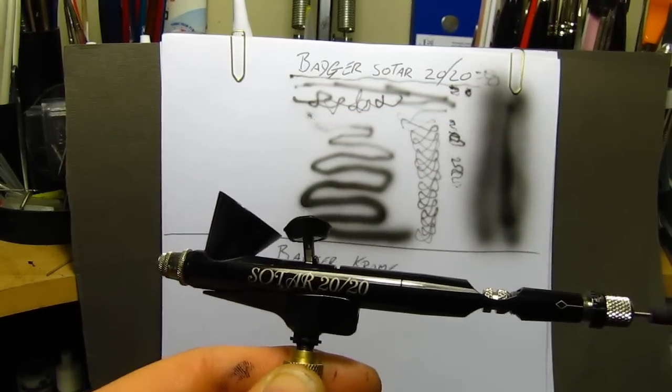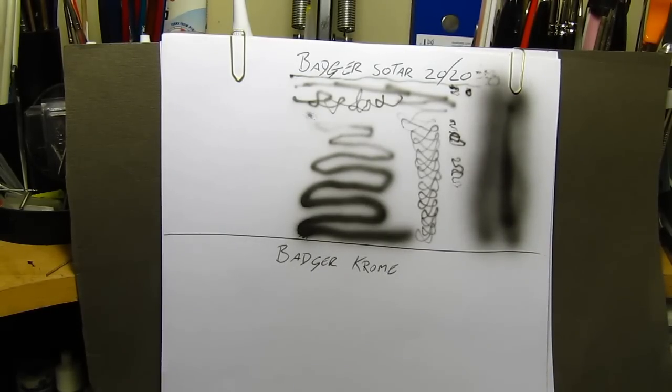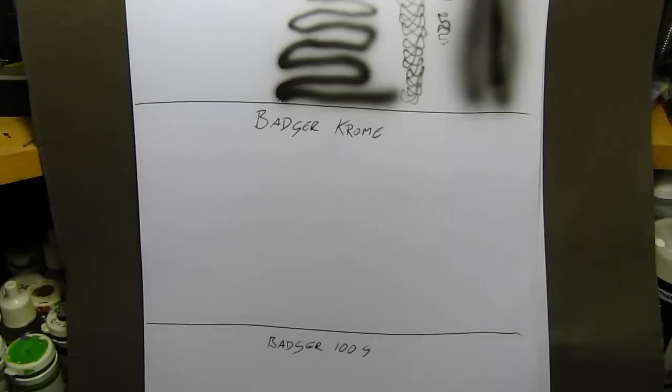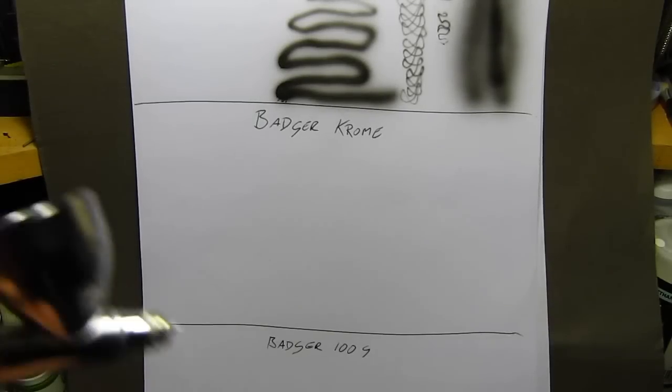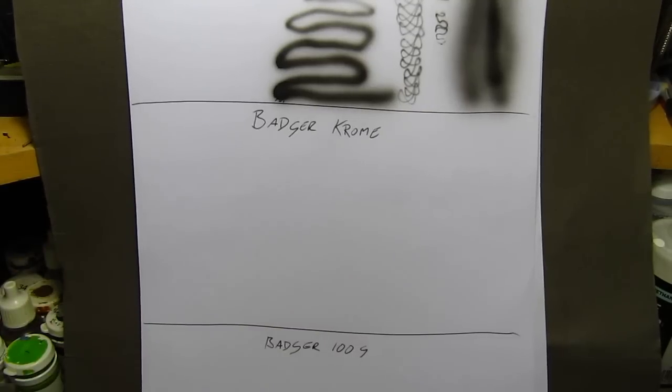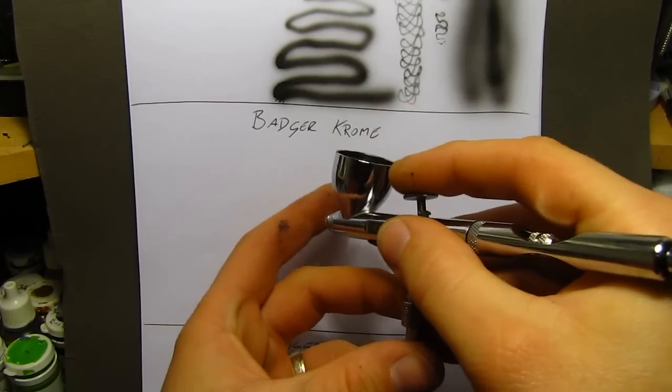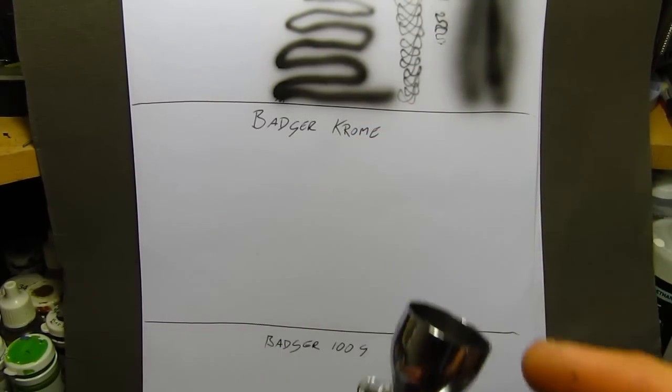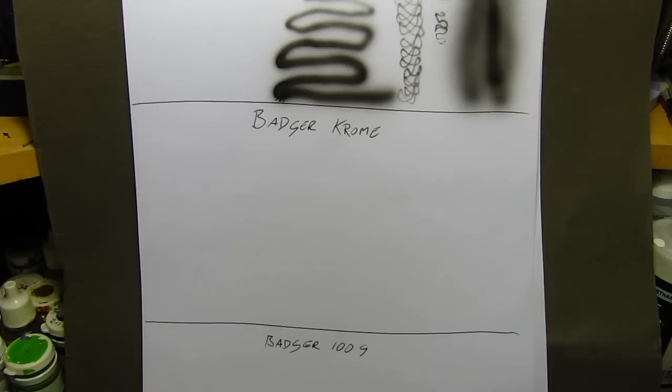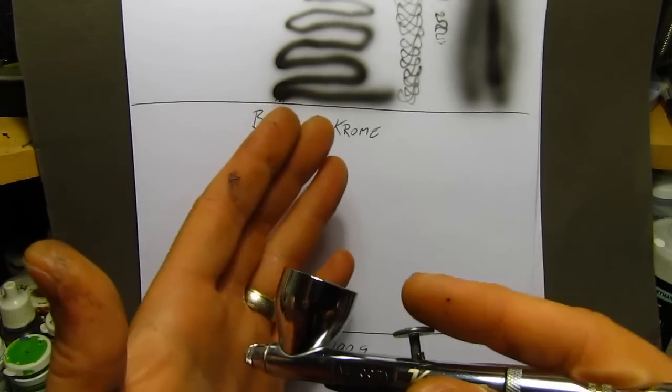And now we're going to transfer over to the Badger Renegade Chrome. And let's see how this new baby of mine, the Renegade Chrome, performs under these conditions. Well first of all, I'm double checking my PSI and it's running as smack on as the other one was. And straight away I can feel more air come out of here.